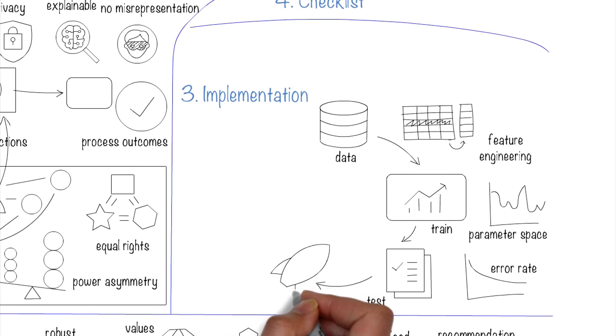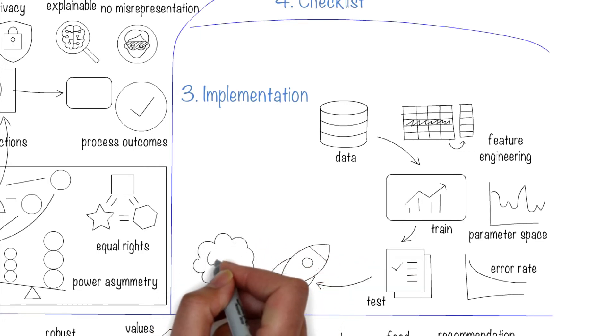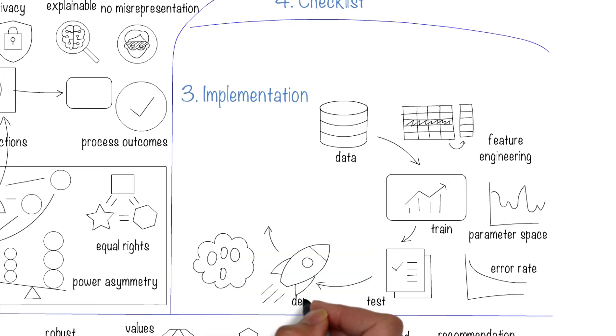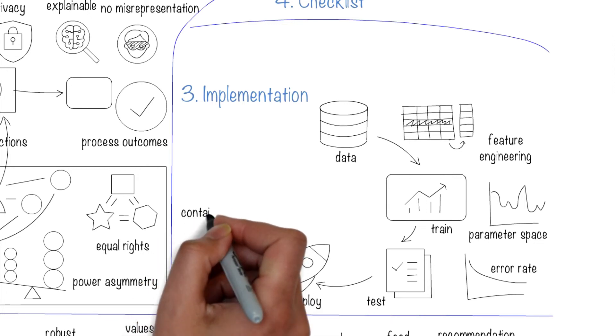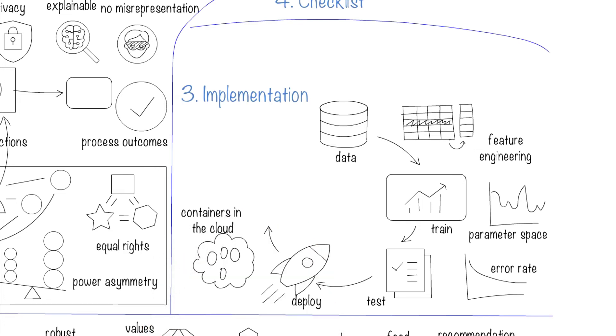Deploying the model is a big step because we have to make choices about the deployment environment, about packaging the model to handle scalability, security, and many other considerations. For example, we may decide to deploy the system on the cloud, scale using containers, and package them in a way to handle large volumes of requests when they happen by auto-scaling.